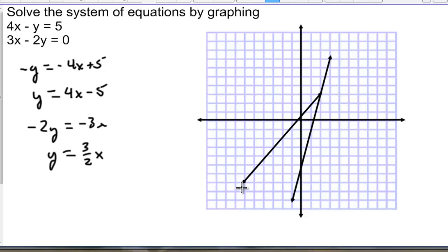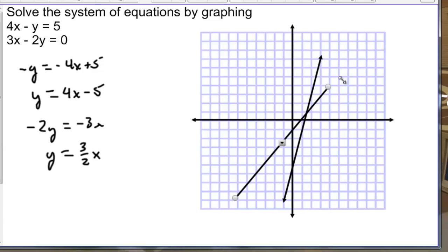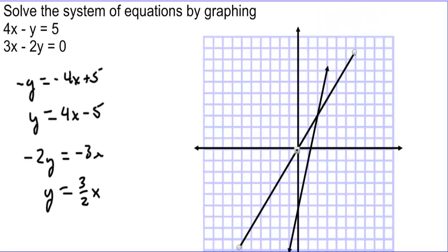So it looks like this is the point where they intersect. I could extend this line out. The point of intersection looks to be 2, 3. So the point 2, 3 seems to solve the equation — we have 8 minus 3 is 5 when we plug in 2, 3. And 6 minus 6 is 0, so we found the solution.